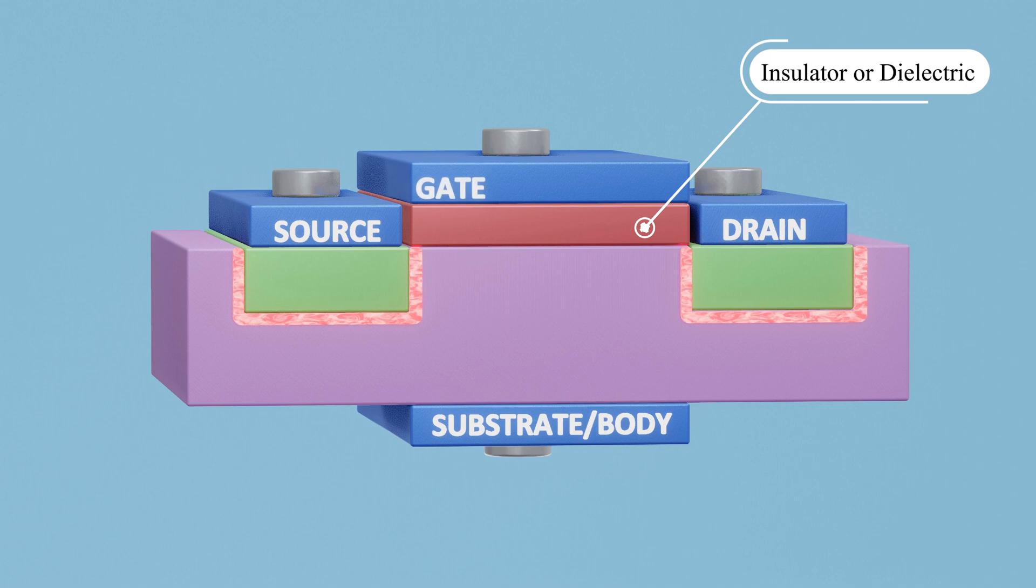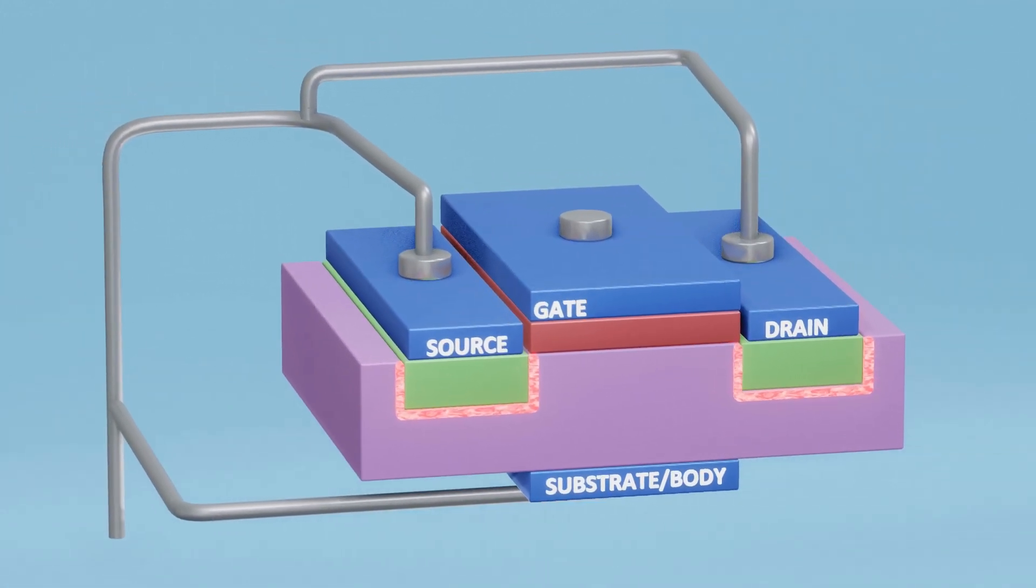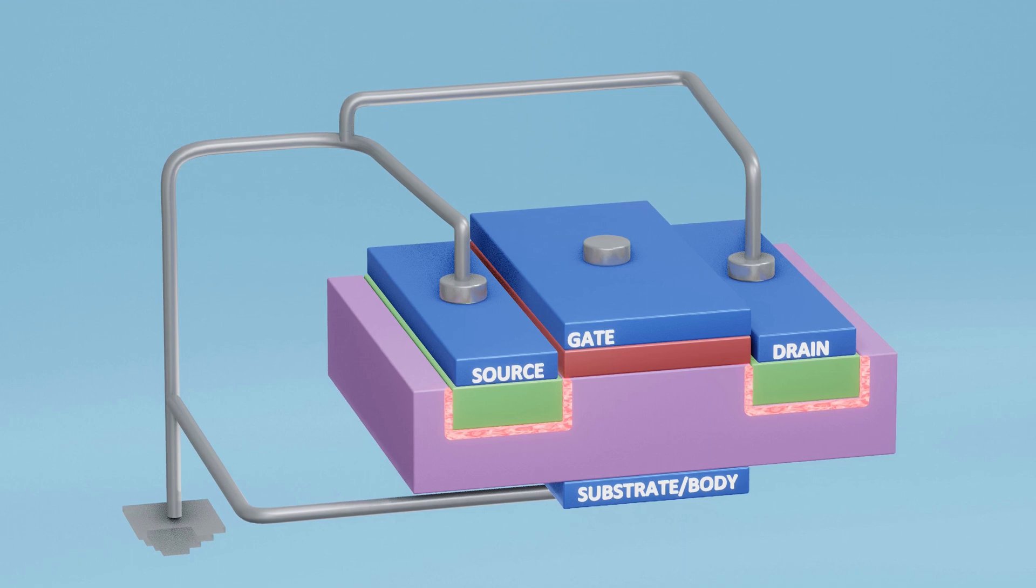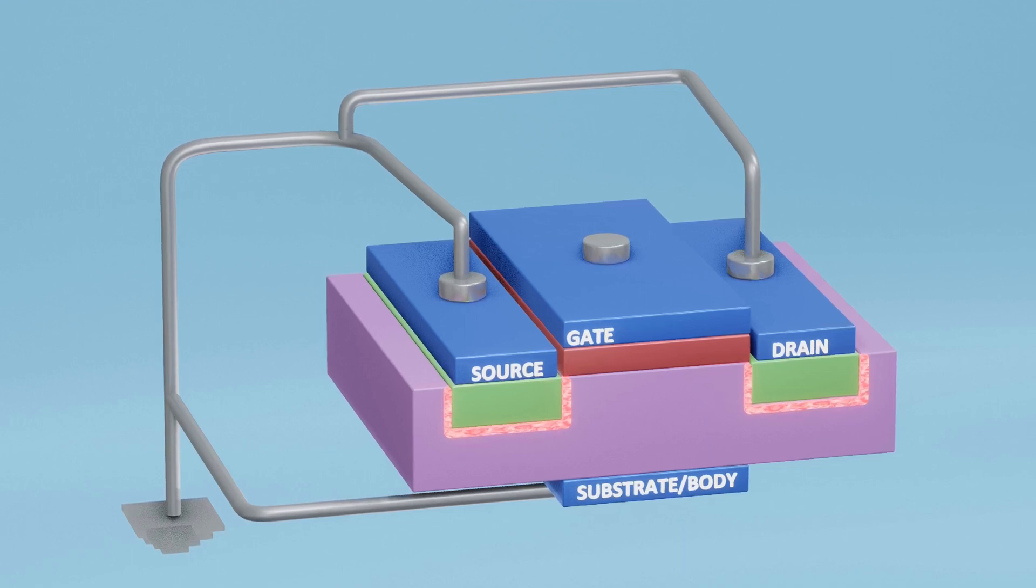Since the MOSFET is symmetrical, the source or the drain can be interchanged. Therefore, the source terminal and the substrate terminal are internally connected, resulting in the MOSFET having three visible terminals. This internal connection prevents any current flow between the substrate and the source since they are at the same potential.